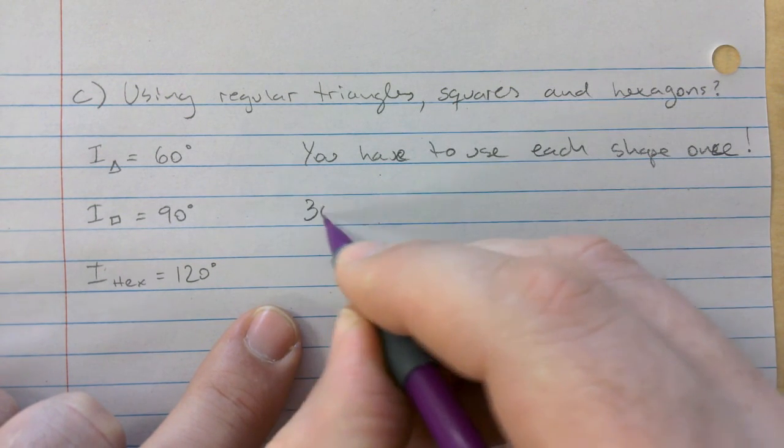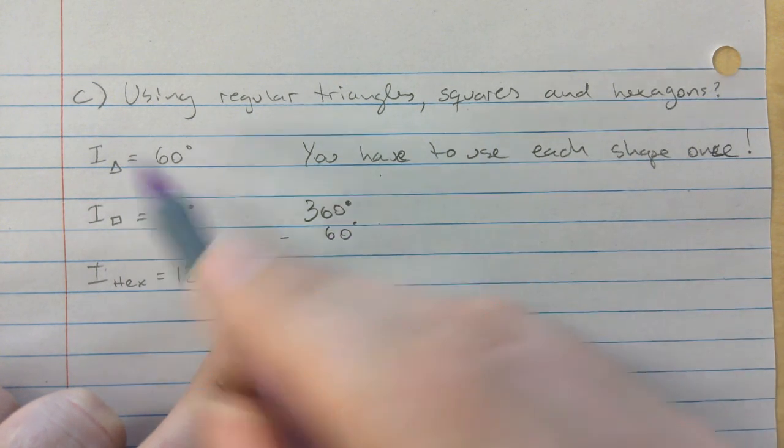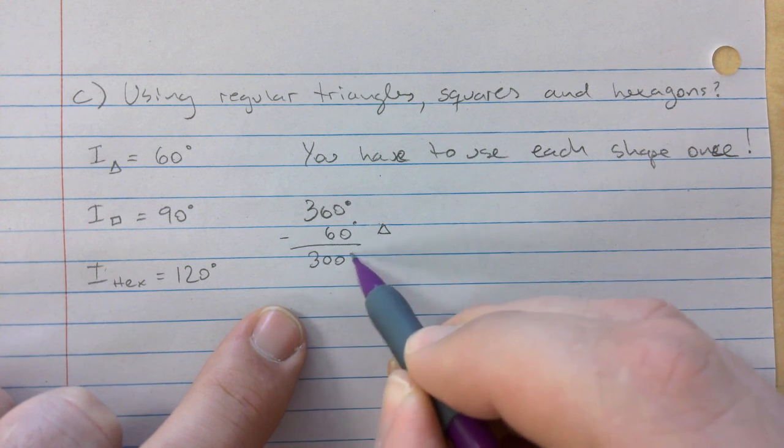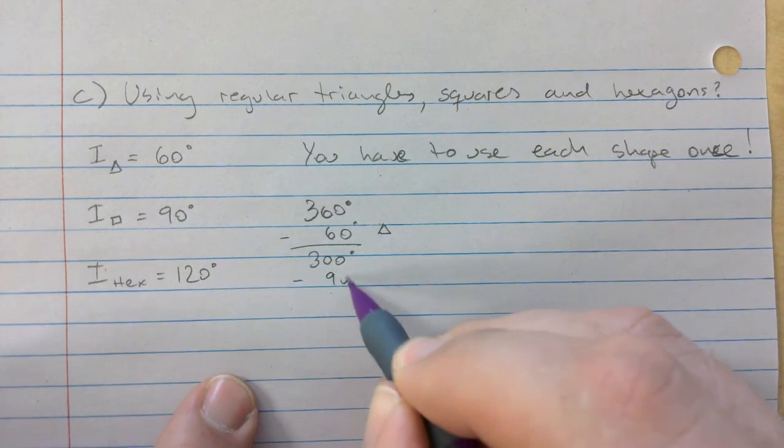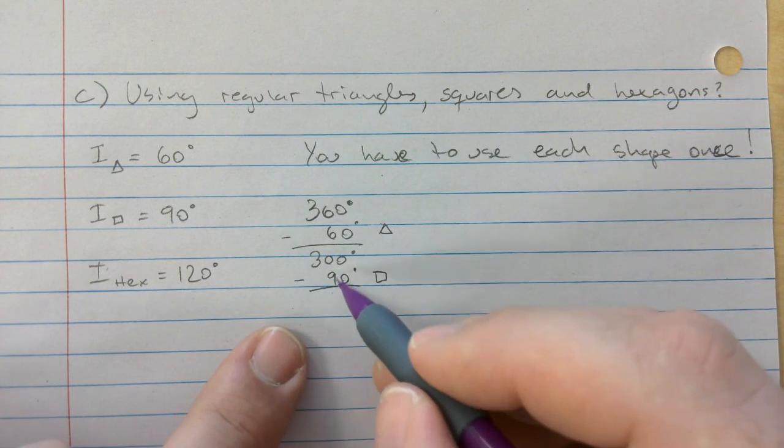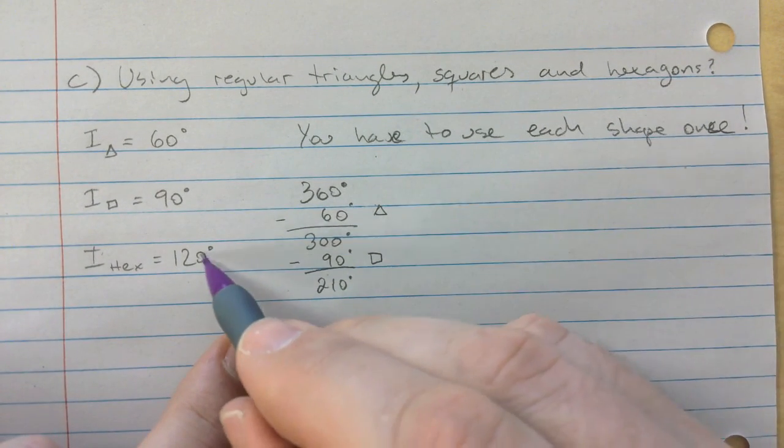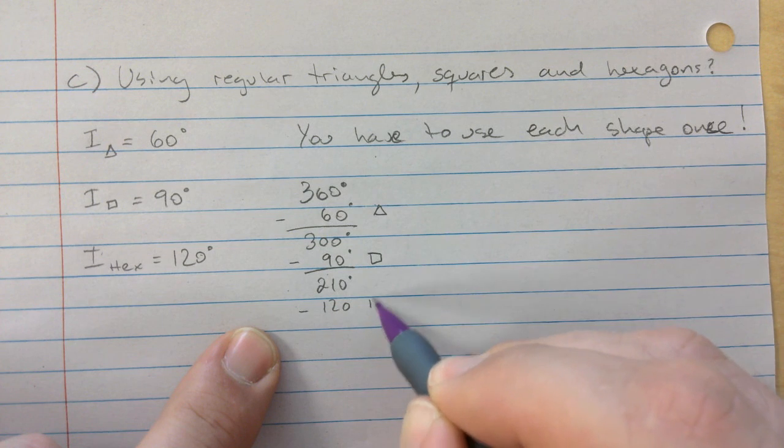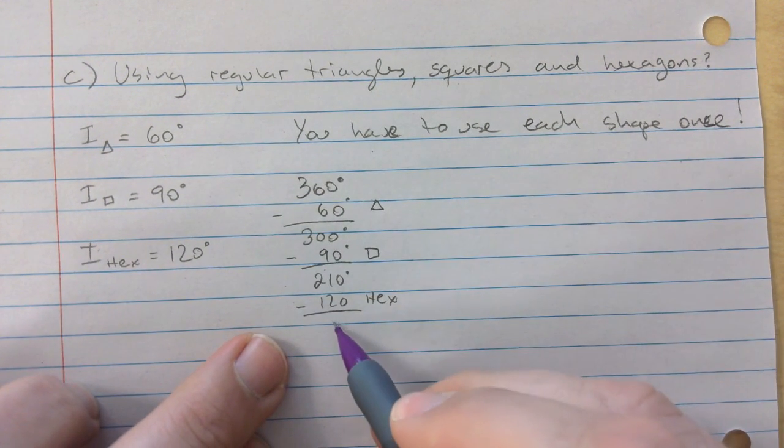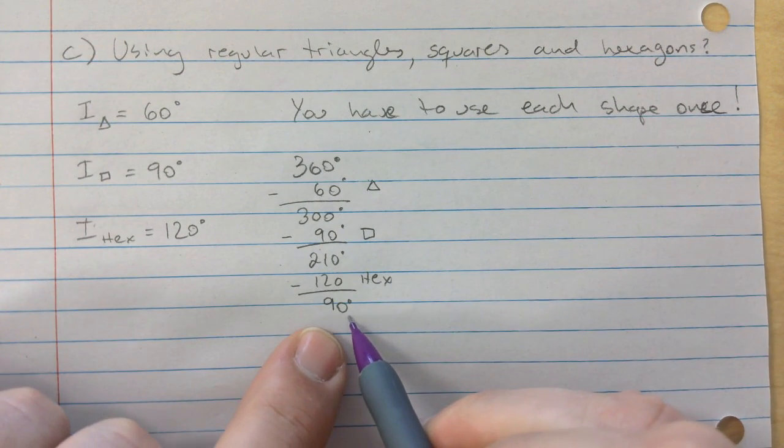So I'm going to go 360 minus the 60, right? This is a triangle, and you get 300. Then I'm going to go minus 90, that's a square, that gives me 210. I'm going to subtract the hexagon. And that gives me 90 degrees. So this is what is left.